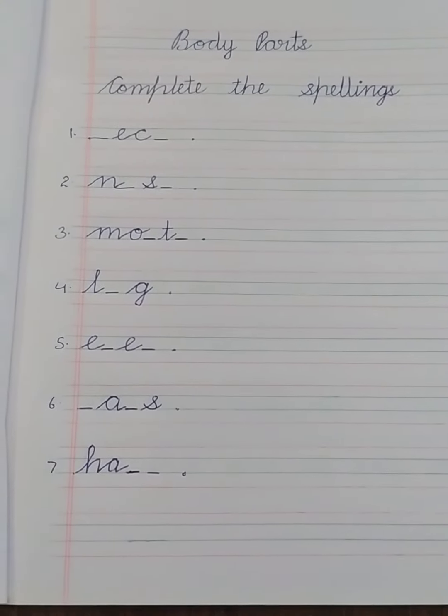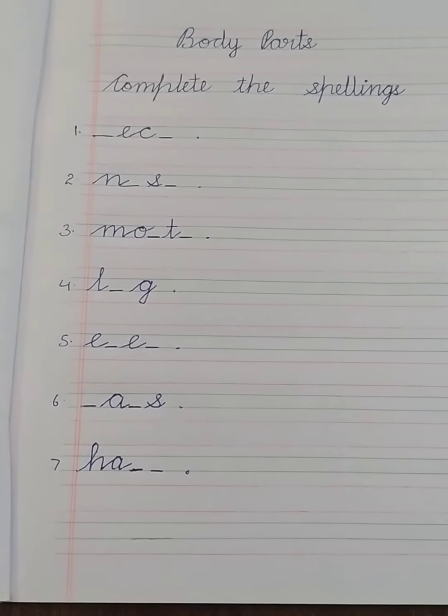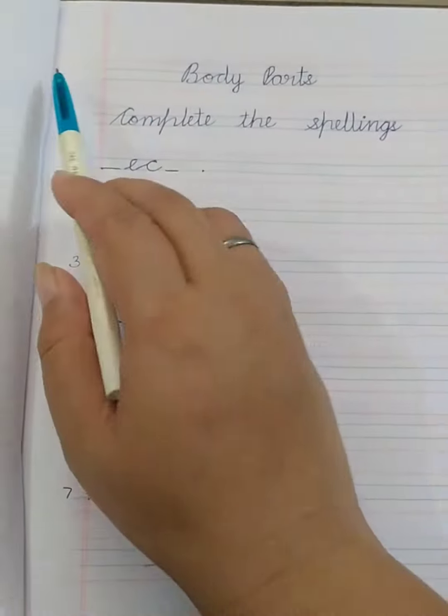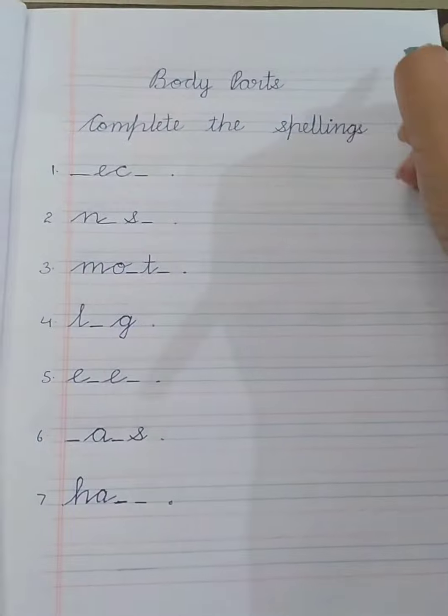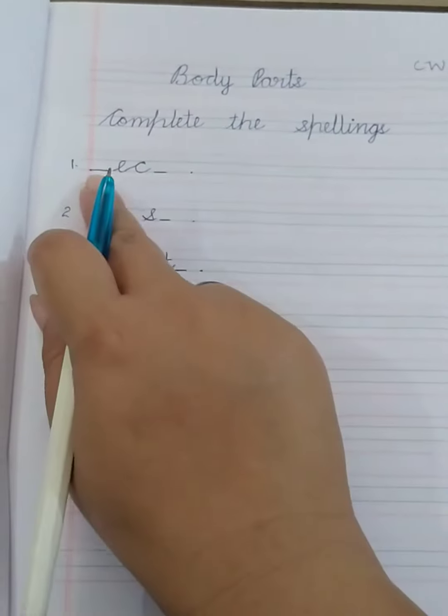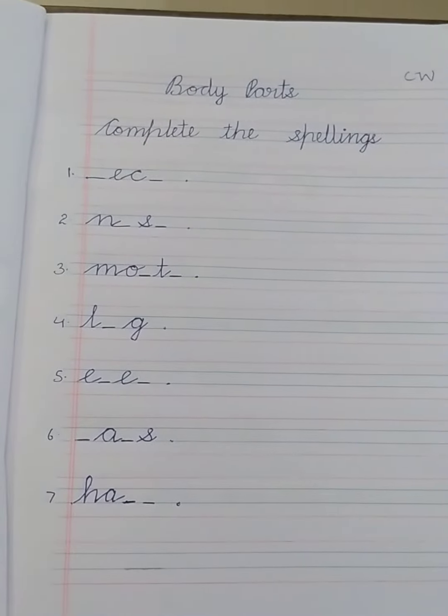We have already done this exercise in other chapters, so we are going to do it in this chapter too. First you will write the date, you will write CW, you will write the heading body parts, complete the spellings, and you will underline them.